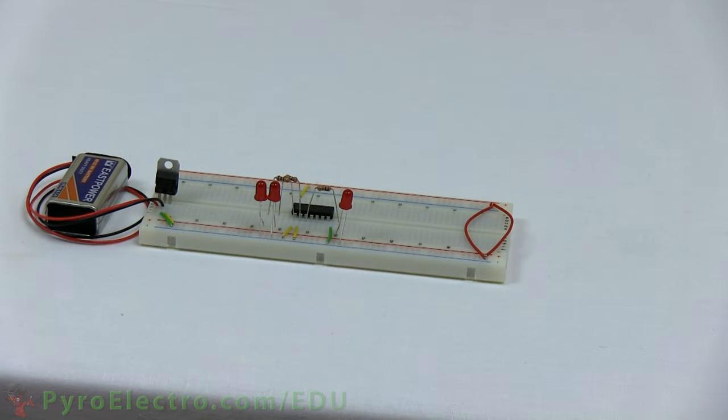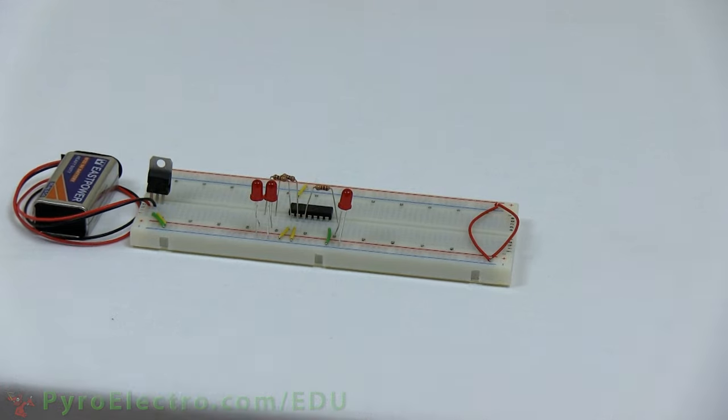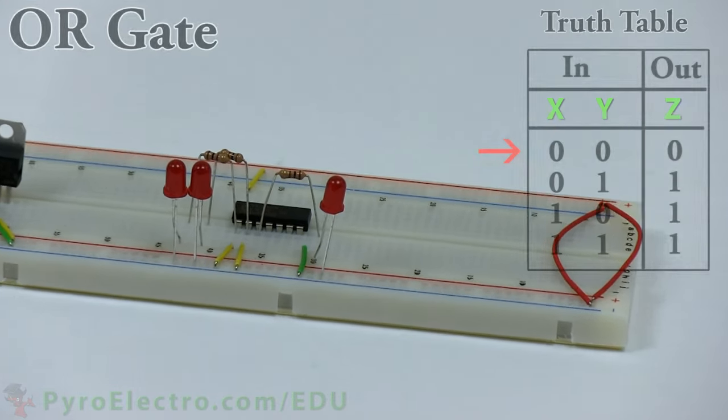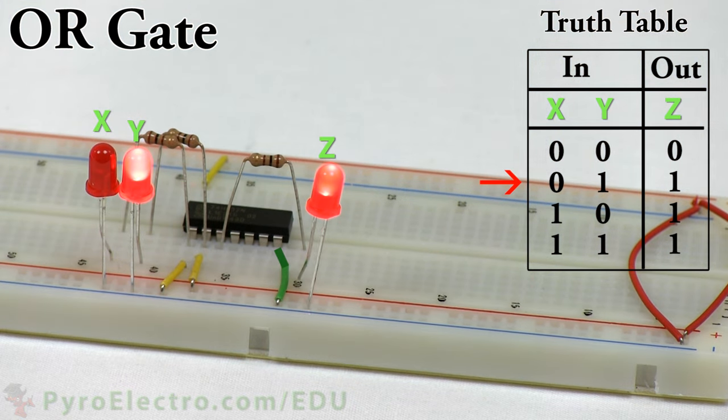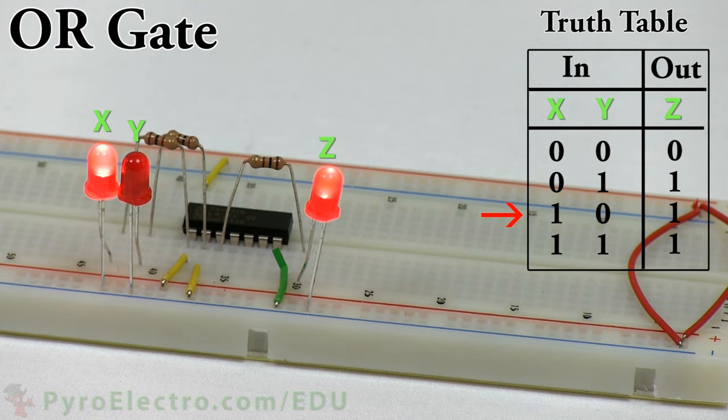Now let's go through the truth table again and verify the OR gate does what we theoretically expect. When the input is 00, represented by the LEDs on the left side, the output is 0. When we change the input to 01, the output is logic 1. Changing the input to 10, the output is still logic 1.